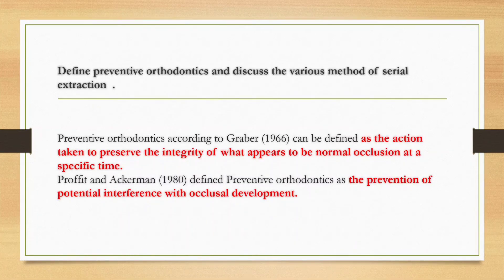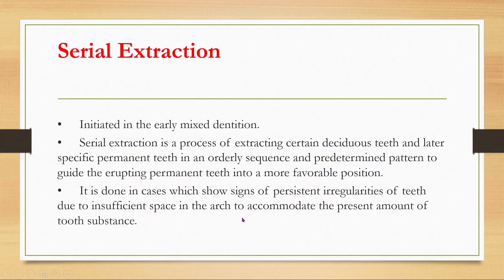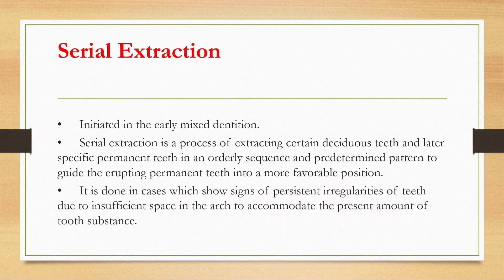Preventive orthodontics and serial extraction: Graber defined preventive orthodontics as action taken to preserve the integrity of what appears to be a normal occlusion, or the prevention of potential interference with occlusal development. Serial extraction is initiated in early mixed dentition and is the process of extracting certain deciduous teeth and later specific permanent teeth in an orderly sequence and predetermined pattern to guide erupting permanent teeth into a more favorable position.